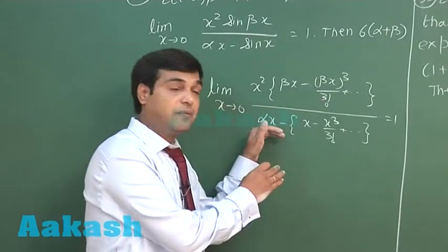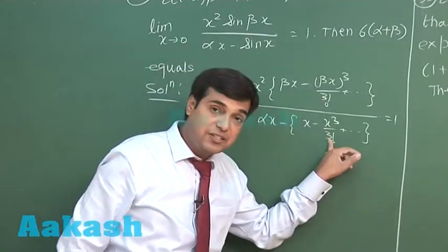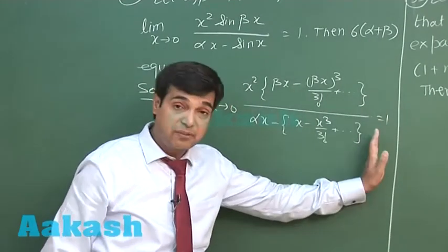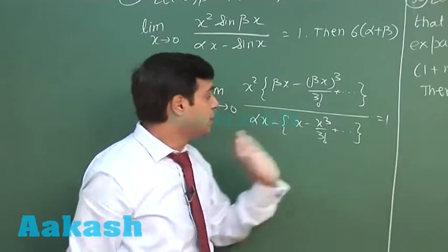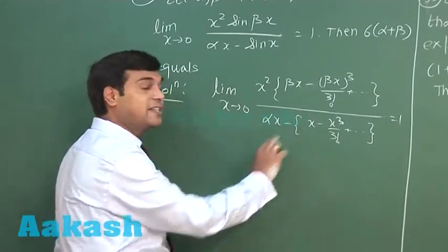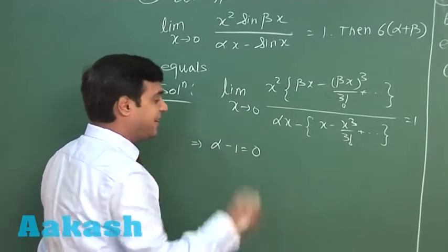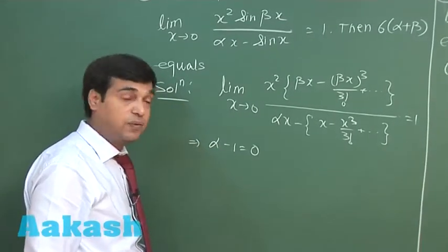Denominator should have definitely the power same as 3, the lowest power, because the numerical value obtained, the limiting value is non-zero as 1. The coefficient of x must be 0. Alpha minus 1 is 0 giving me alpha equals 1.